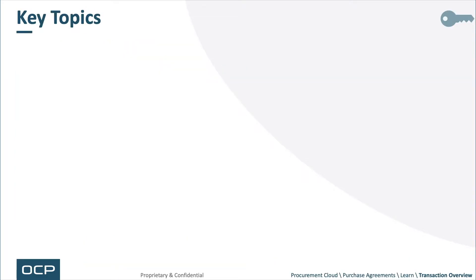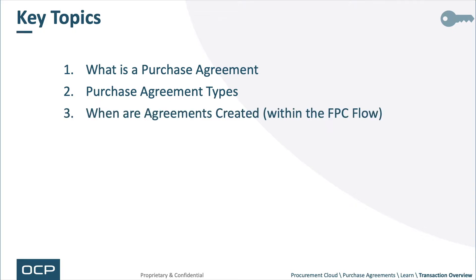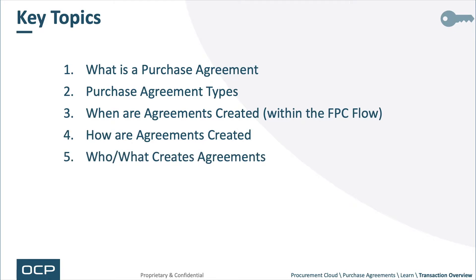Key topics are as follows: What is a purchase agreement? Purchase agreement types, with examples. When are agreements created — that being within the FPC, also known as the Fusion Procurement Cloud Business Process Flow. How are agreements generated? Who or what creates agreements? And why are agreements created? So let's get started.